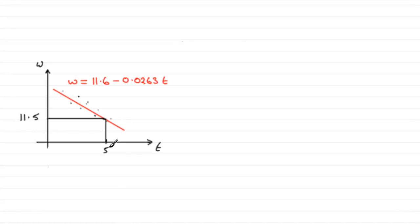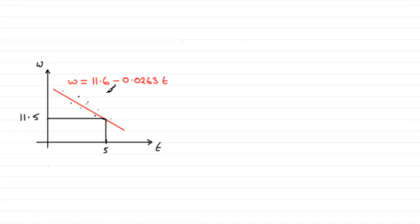Well, in an earlier part — part E part 1 — we found out that if a coin was 5 years old, we would expect the weight to be approximately 11.5 grams. That was the result we got roughly when we substituted 5 into the equation. Now we've got a coin that's 5 years old with a weight of 20 grams, so let's say it's up there on the graph.